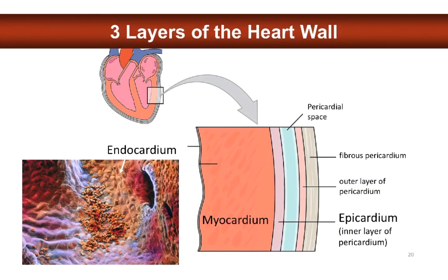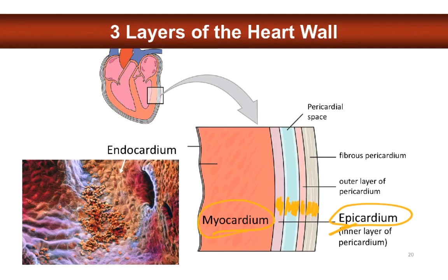There are three layers to the wall of the heart. The epicardium — the prefix 'epi' means above or on top of — is the outer layer, made up of the visceral pericardium, the pericardial space, the parietal pericardium, and the fibrous pericardium, which helps anchor the heart. The middle layer is called the myocardium, made of cardiac muscle. Then you have the endocardium, which is one or more layers of epithelial cells referred to as endothelium.